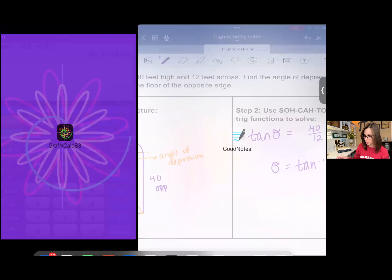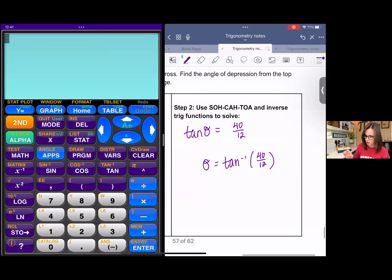We can find the approximate solution. I'm in degree mode, so I'm good there. So I'm going to do second tangent of 40 over 12. And we get about 73.3 degrees. And that's all.